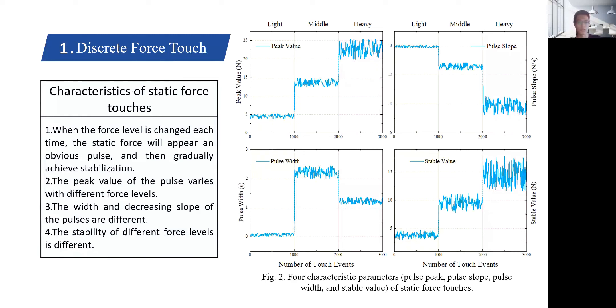The volunteer shows the following characteristics when performing different levels of static force touches. First, when the force level is changed each time, the static force will appear an obvious pulse and then gradually achieve stabilization. Second, the peak value of the pulse varies with different force levels. The pulse value is low or the pulse even does not appear when the force is light. However, when the force becomes heavier, the peak value becomes high.